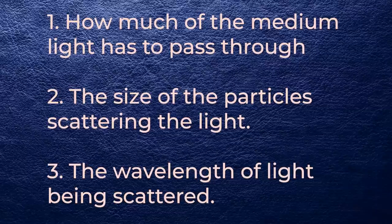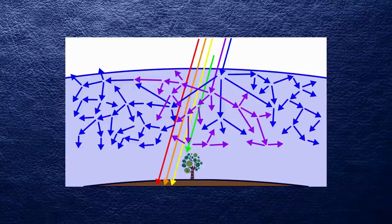Sunlight is a mixture of different colors, each with its own wavelength. How much a particular wavelength scatters depends on three things: how much of the medium the light has to pass through, the size of the particles scattering the light, and the wavelength of the light being scattered. Generally, the shorter wavelengths tend to get scattered more, so the blues and the violets — which have the shortest wavelength — scatter all over the sky before eventually ending up in our eye. That's why the sky looks blue to us, and the sun looks a sort of yellow, because that's what's left after the blues and violets are gone.